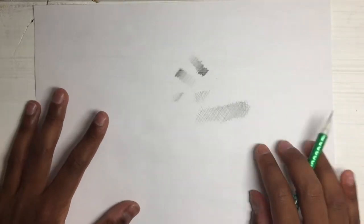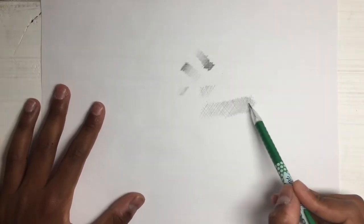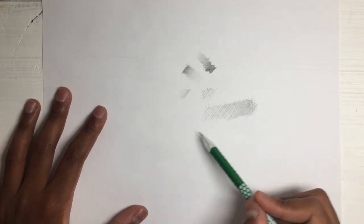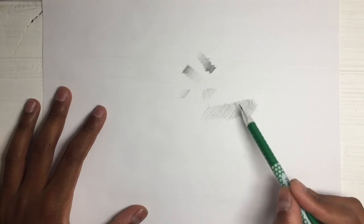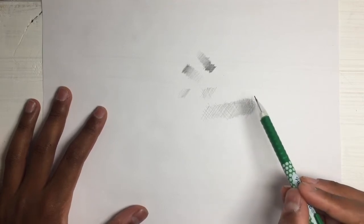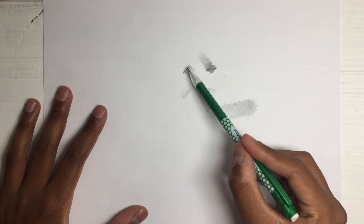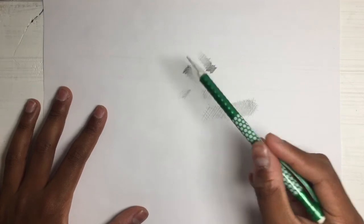And now we've cross hatched a very nice value progression. We can see it appears to be lighter over here and darker over here. However, we can also see that the lighter areas are not as fluid as with layering or pressure control.